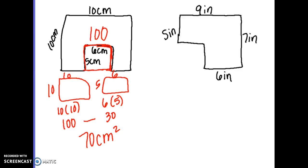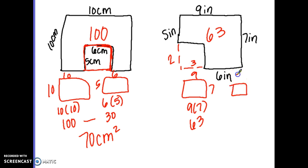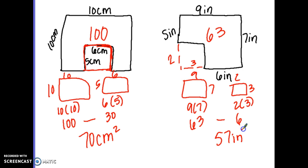The next problem works the same way. The whole shape is 9 by 7, which is 63. The cut-out piece: if the total height is 7 and the top is 5, then the remaining height is 2; if the total width is 9 and this side is 6, then the remaining width is 3. The cut-out is 2 by 3, which is 6. So 63 minus 6 is 57 square inches.